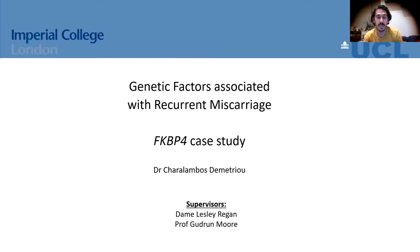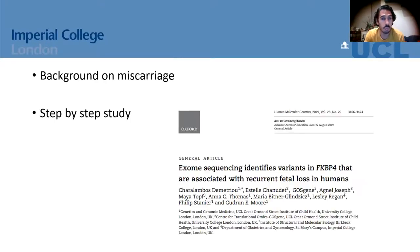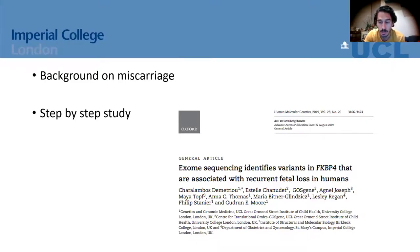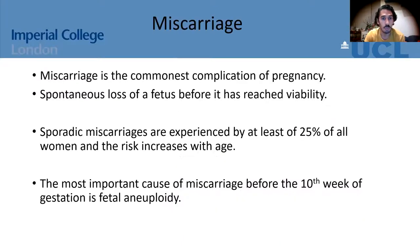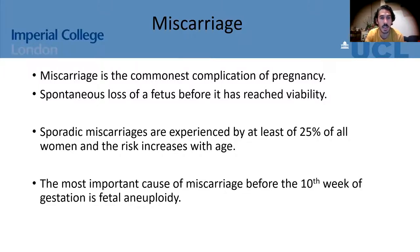I decided to present a study I did in my PhD that is mostly about genetics, since it's a genetic society. I'll give you a bit of background on miscarriage and then take you step by step through this study to show how we work in the lab. It was a study published in 2019. Miscarriage is the commonest complication of pregnancy — it is a spontaneous loss of a fetus before it has reached viability, between conception and the 24th week of pregnancy.